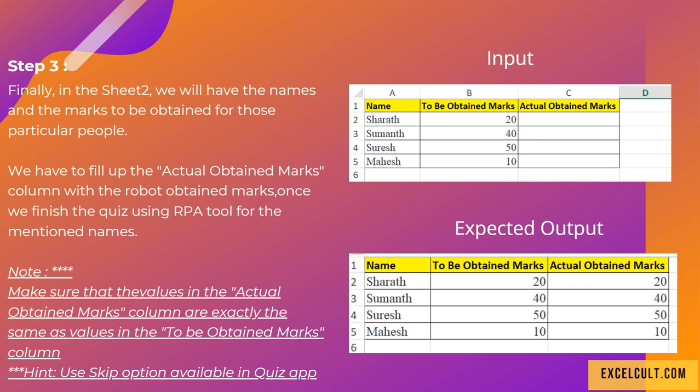As you can see in the input and in the output, we have to fill up the actual obtained marks column with the robot obtained marks once we finish the quiz using the RPA tool for the mentioned names.